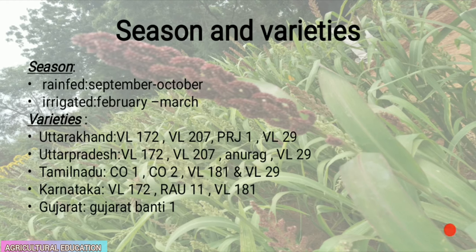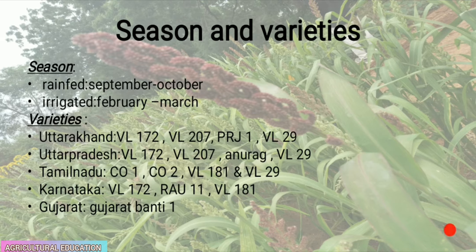For rain-fed barnyard millet, the crop can be raised from September to October, whereas irrigated crop is raised from February to March. Varieties cultivated in different areas: in Uttarakhand — VL 172, VL 207, PRJ 1, VL 29; in Uttar Pradesh — VL 172, VL 207, Anurag, VL 29; in Tamil Nadu — CO1, CO2, VL 181, VL 29; in Karnataka — VL 172, RAU 11, VL 181; and in Gujarat — Gujarat Banti 1.